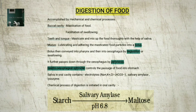The chemical process of digestion is initiated in the oral cavity. About 30% of starch is hydrolyzed by the enzyme salivary amylase at an optimum pH of 6.8 into a disaccharide, maltose. Lysozyme present in the saliva acts as an antibacterial agent that prevents infections.